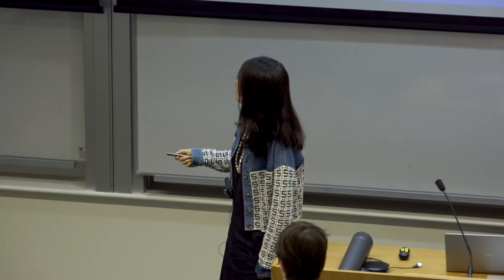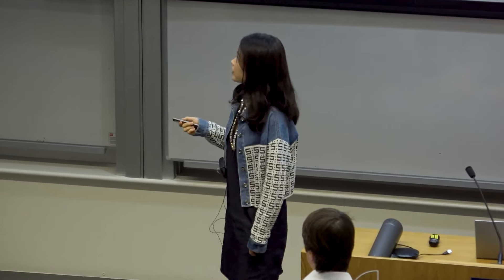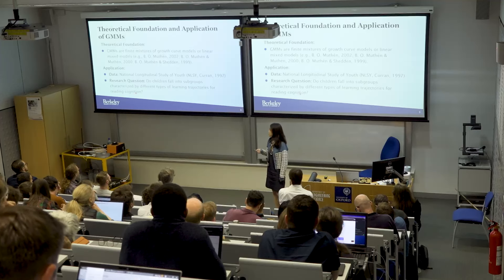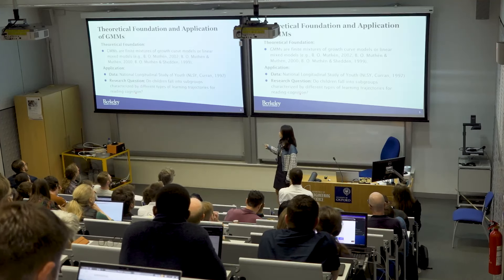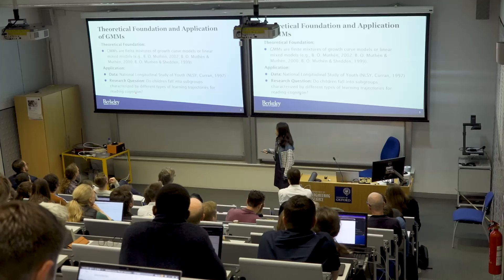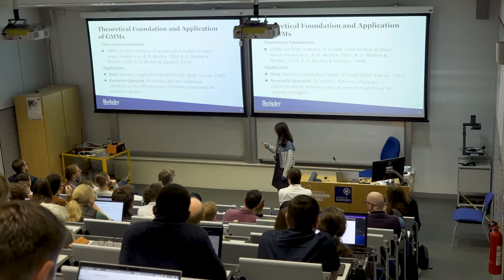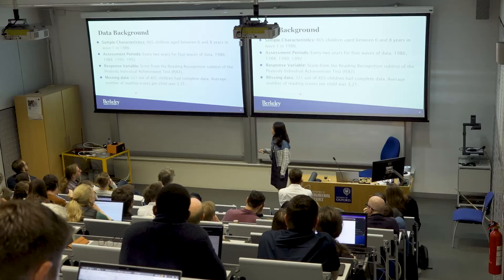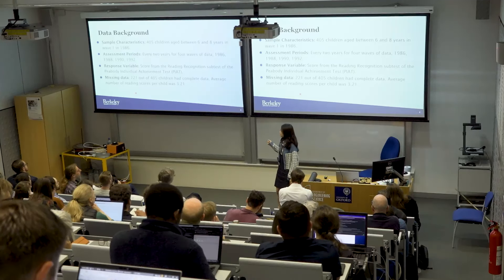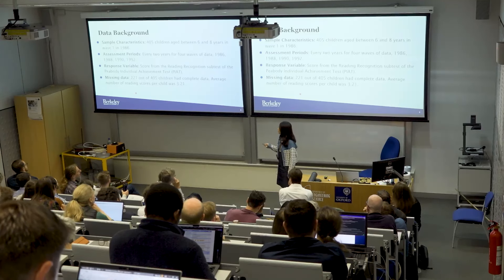A quick introduction: a growth mixture model (GMM) is a finite mixture of growth curve models where each class has a class mean trajectory that can be linear or quadratic. This study illustrates through an application using the National Longitudinal Study of Youth to uncover latent trajectory patterns underlying students' reading ability, with 405 children aged 4 to 16.